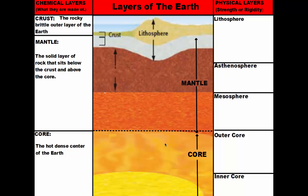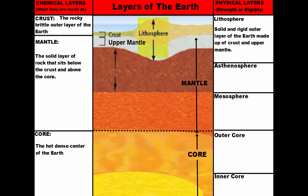Now let's talk about the physical layers, which are divided based on their strength, rigidity, or how inflexible they are. Our top layer is the lithosphere — a solid, rigid outer layer made up of the crust and the upper mantle. The prefix 'lithos' means rock, so this is basically the rock sphere. The lithosphere starts from the top of the crust and goes down into the mantle, through the upper solid part of the mantle.